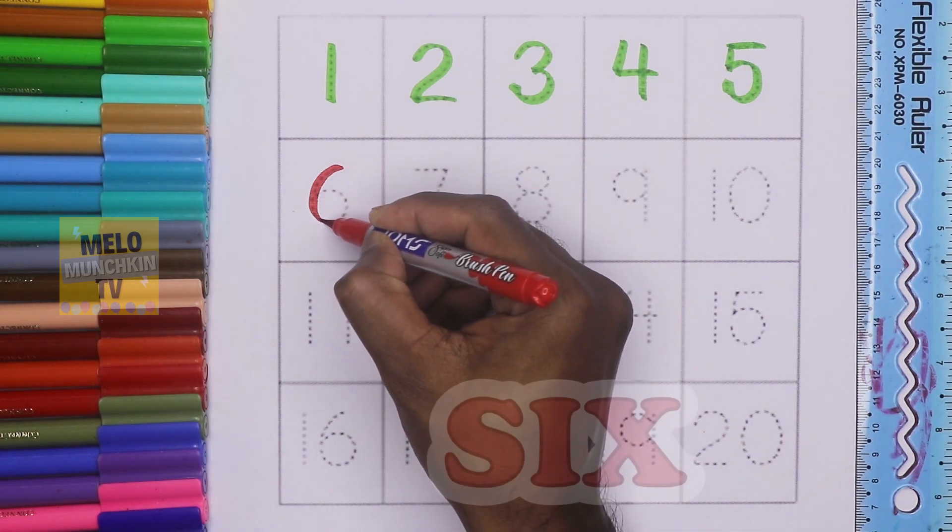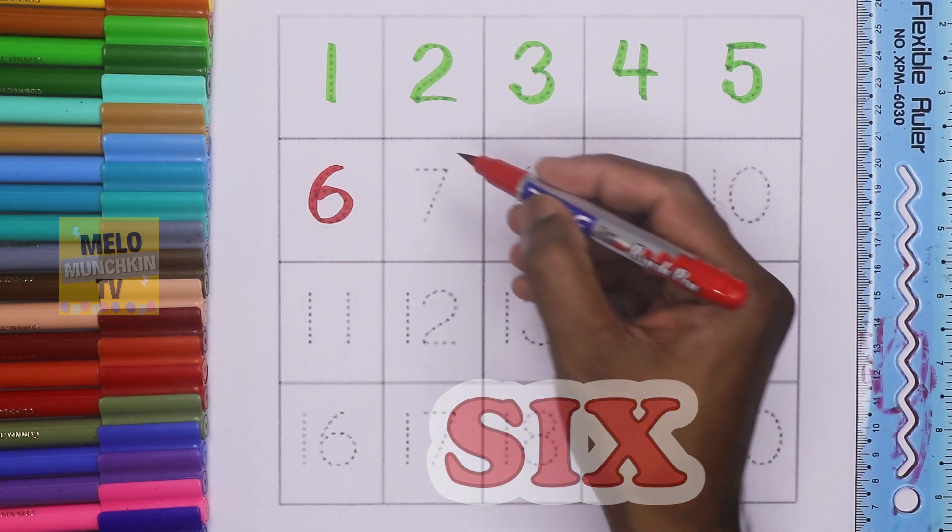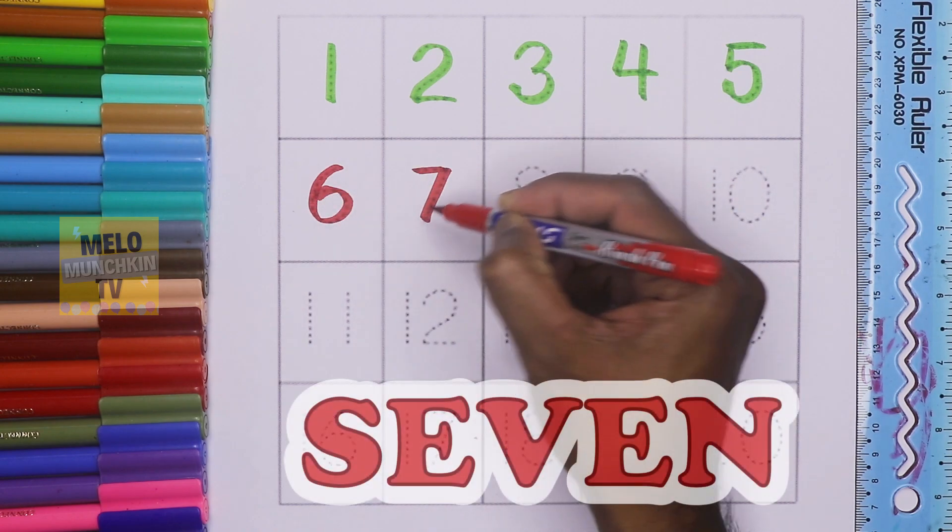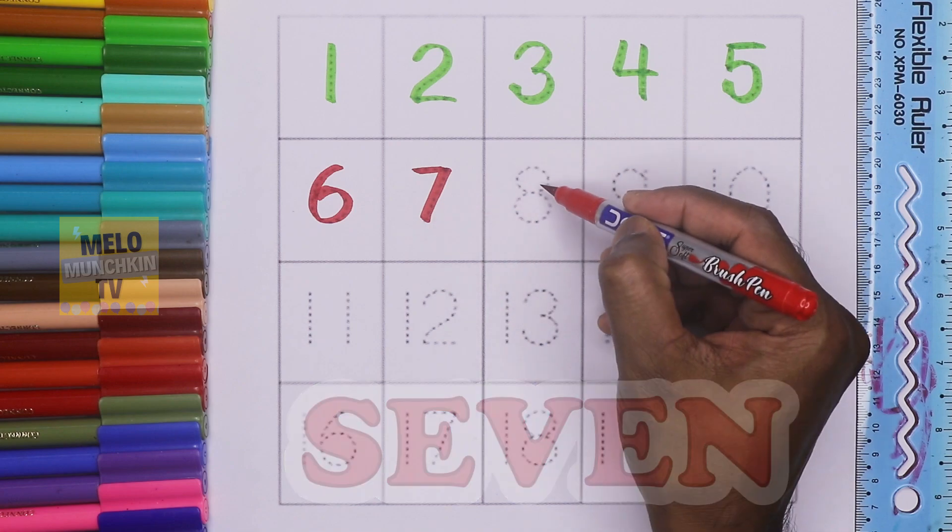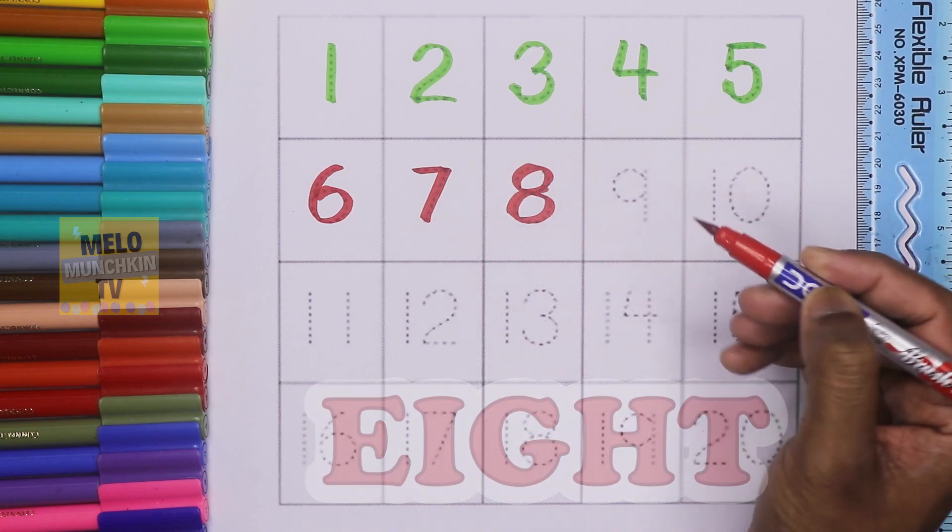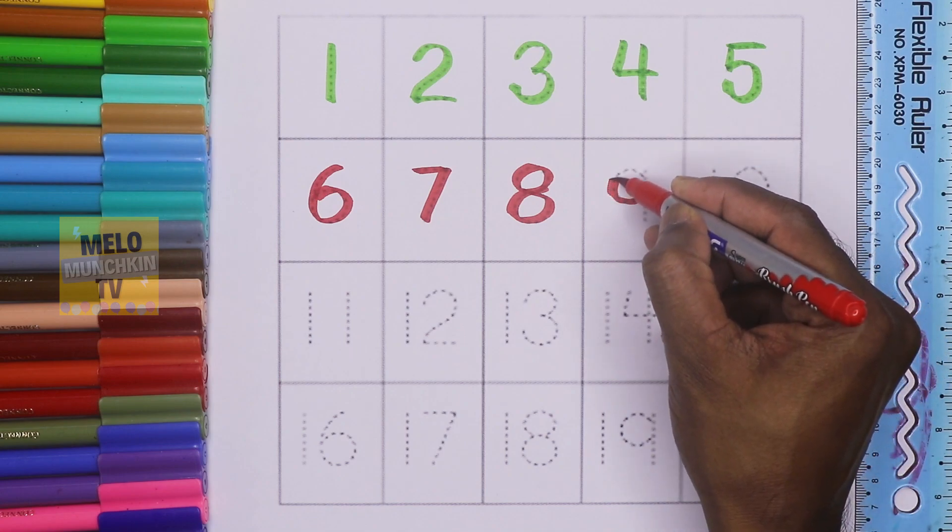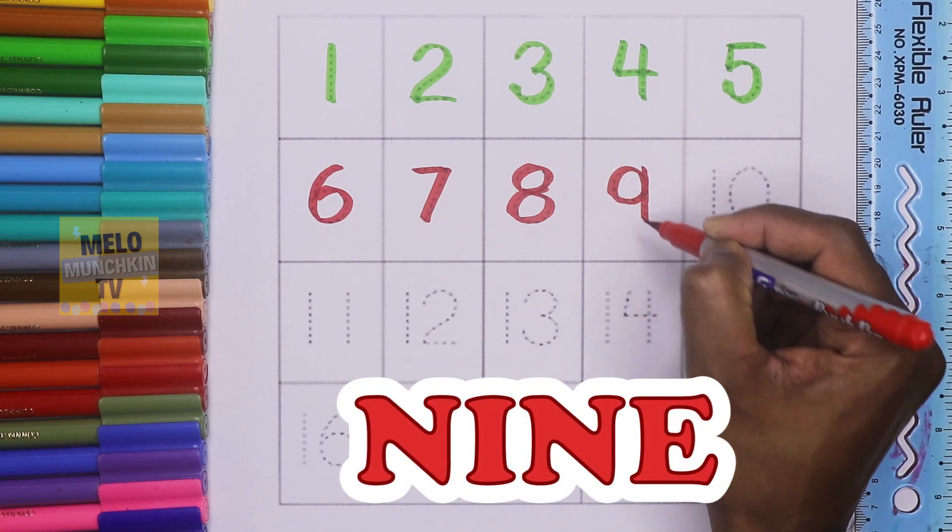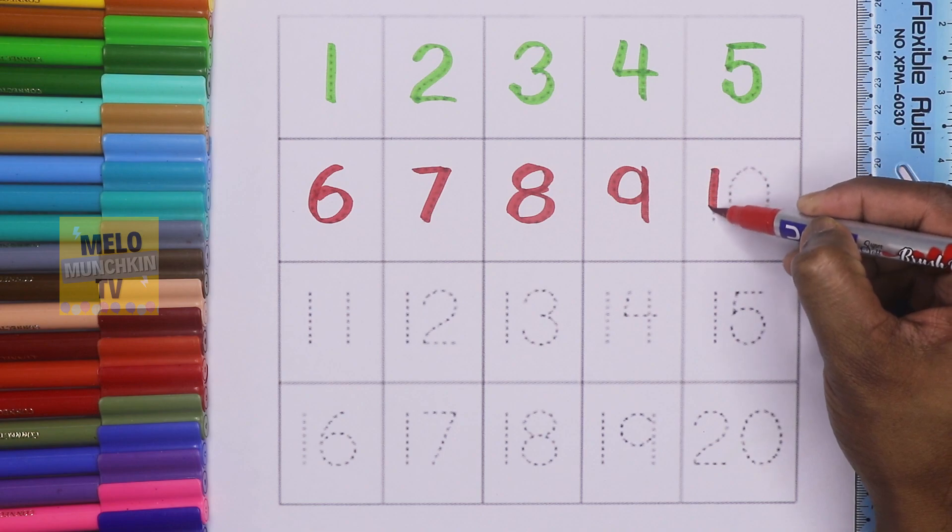This is 6, six. This is number 7, seven. This is 8, eight. This is number 9, nine.